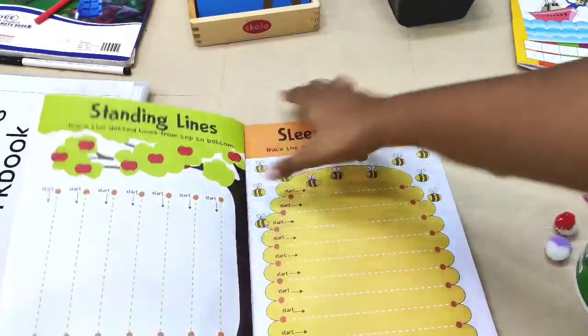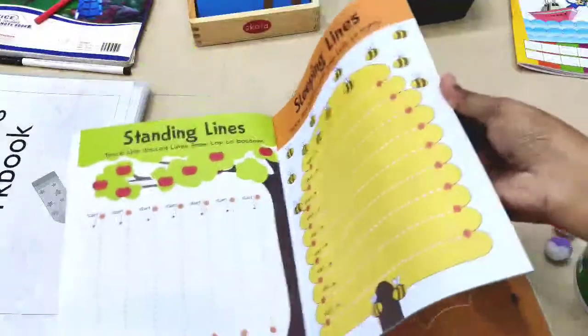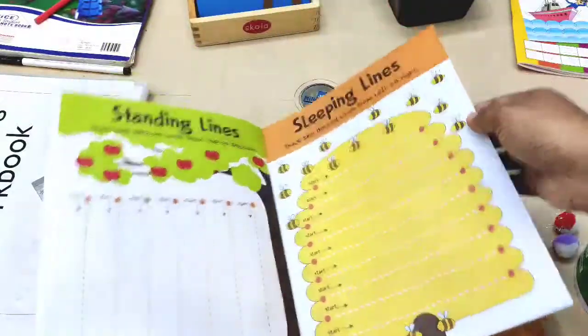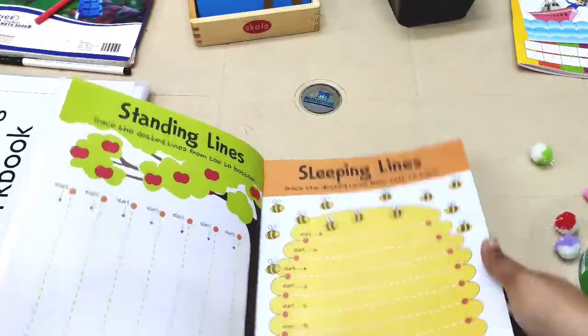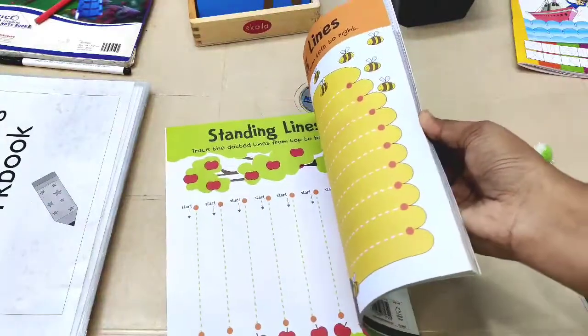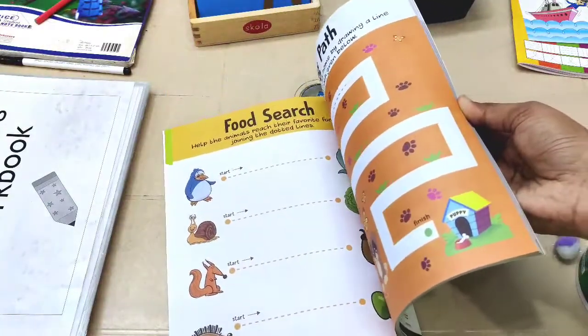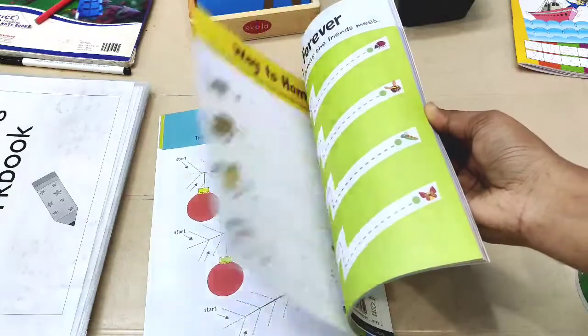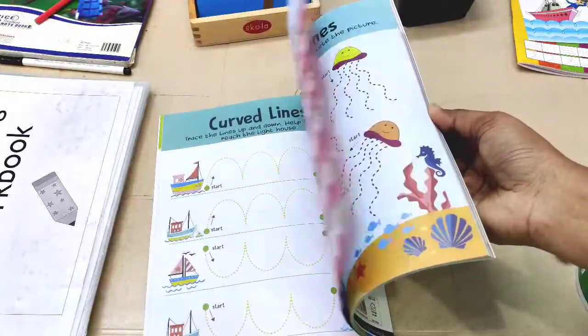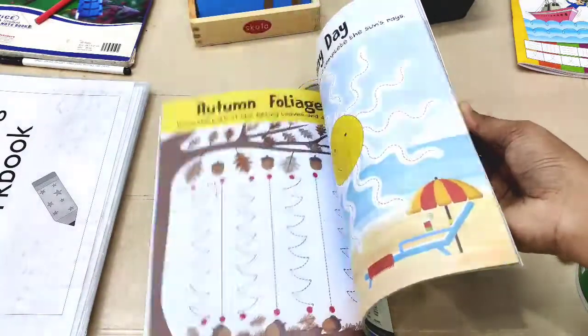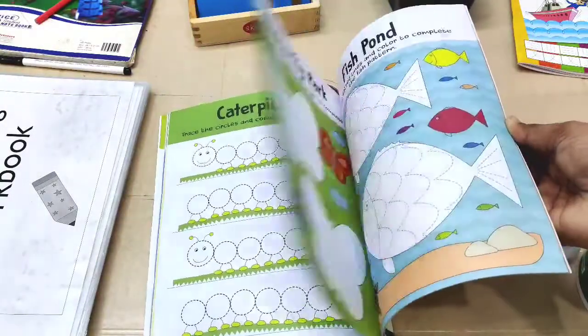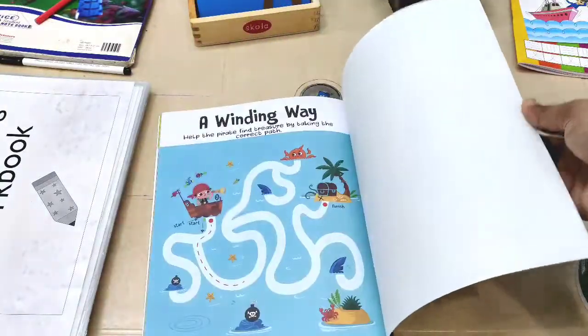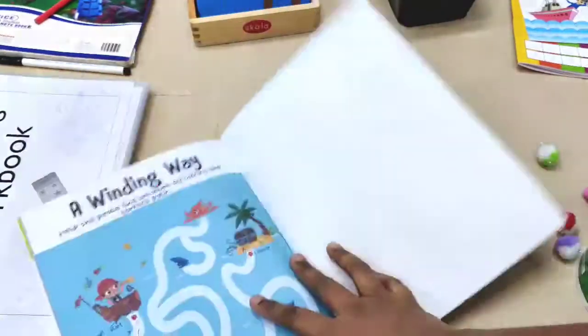It has all the strokes: standing line, sleeping line, slanting line, curves, shapes, zigzags, spirals. I'm just going to flip through it. It also has mazes like this one. It's a great book.